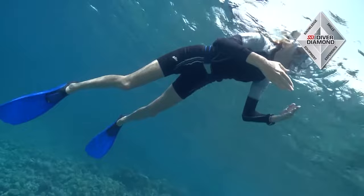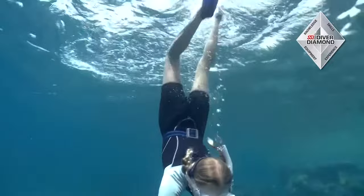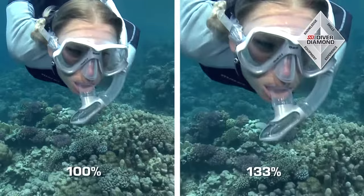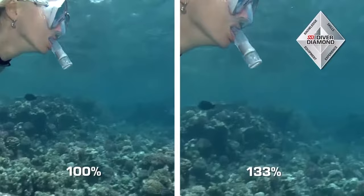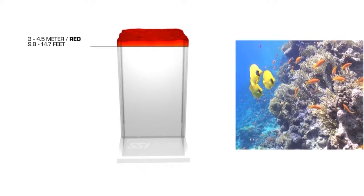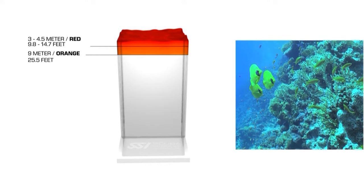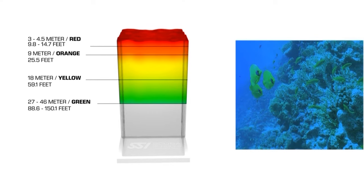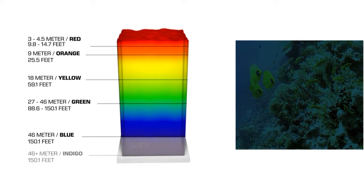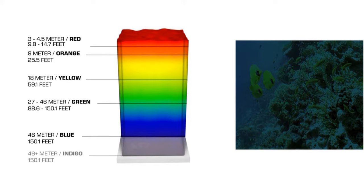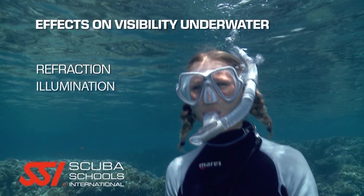There is an interesting optical illusion called refraction. Light rays bend as they pass from air through water and magnify objects by about one-third. This means that an object one meter or three feet away will appear closer and fish will appear larger. Additionally, the deeper you dive, the warm colors red, orange and yellow will virtually disappear and your eyes will only see blues and purples. This is called absorption. Many variables will affect visibility underwater: refraction, illumination, absorption, diffusion and turbidity.